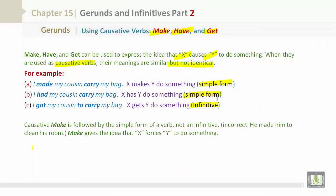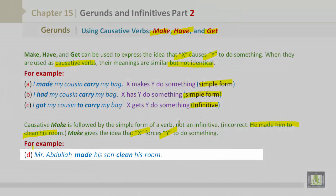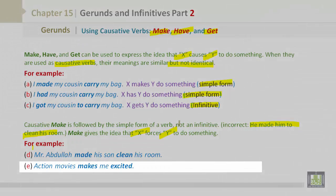Causative make is followed by the simple form of a verb, not an infinitive. Incorrect: He made him to clean his room. Make gives the idea that X forces Y to do something. For example: Mr. Abdullah made his son clean his room. Action movies make me excited.